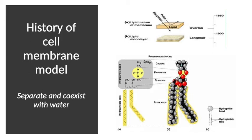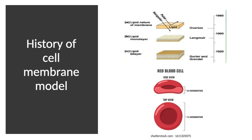So the tail acts like fat that separates water from water, while the phosphate head is hydrophilic and loves water. That's why the first feature — separating and coexisting with water at the same time — can be fulfilled by the phospholipid molecule, because some parts hate water and other parts love water and attract it.